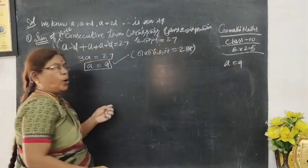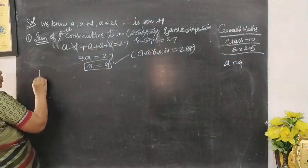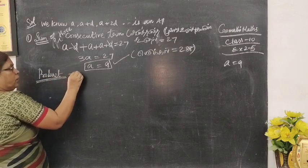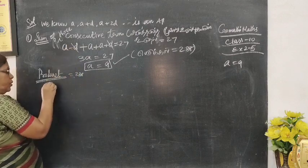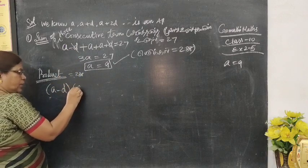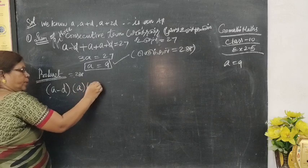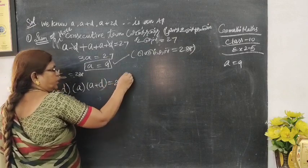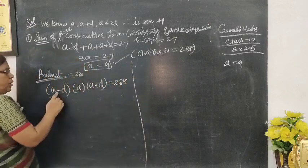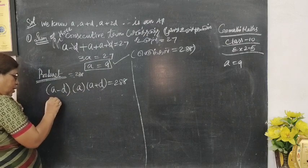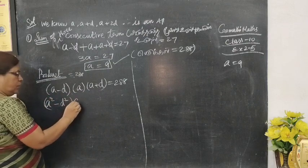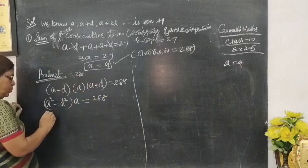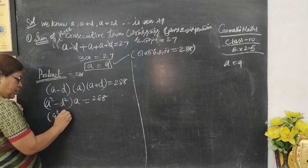The product is 288. The product of a minus d, a, and a plus d equals 288. This can be written as: a minus d into a plus d gives a squared minus d squared, and multiplying by a equals 288. Now we substitute a equals 9.